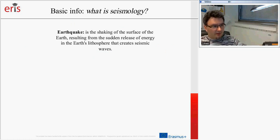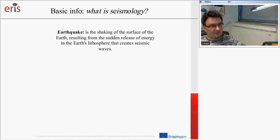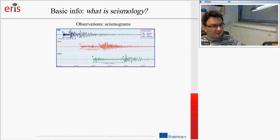First of all, some basic information concerning seismology. What is an earthquake? An earthquake is the shaking of the surface of the Earth, resulting from the sudden release of energy in the Earth's lithosphere to create seismic waves. We measure it using some kind of plots and devices — we call these plots seismography. Here you have an example of such a seismography.